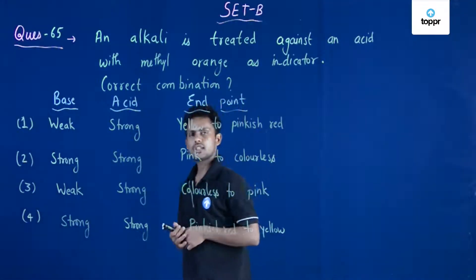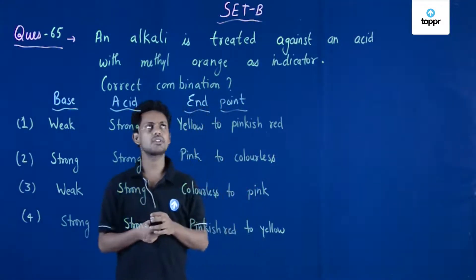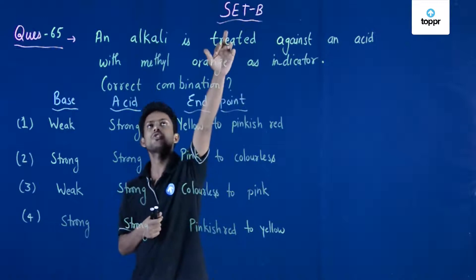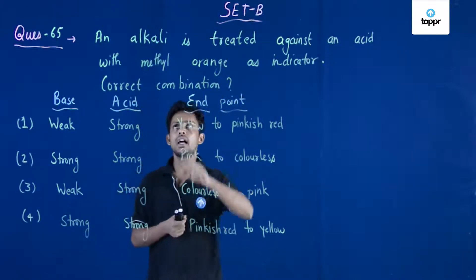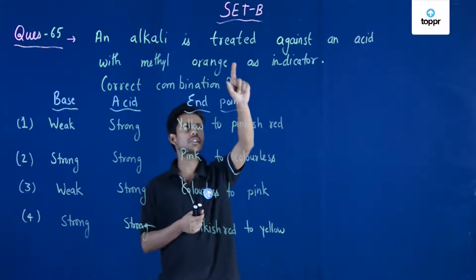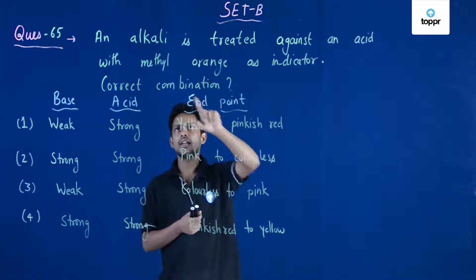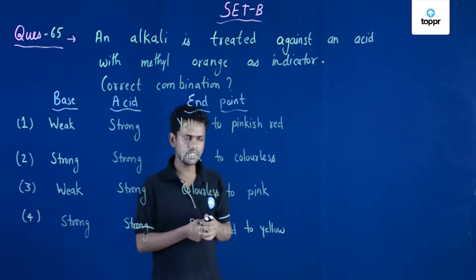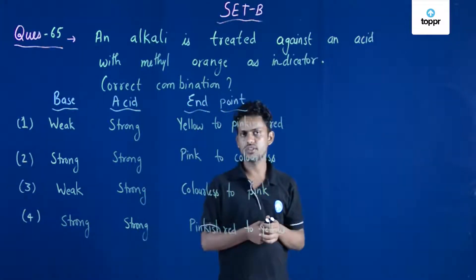This is another question asked in JEE Mains 2018. I have taken this question from Set B, question number 65. It says that an alkali is treated against an acid with methyl orange as indicator, and we need to answer what is the correct combination.